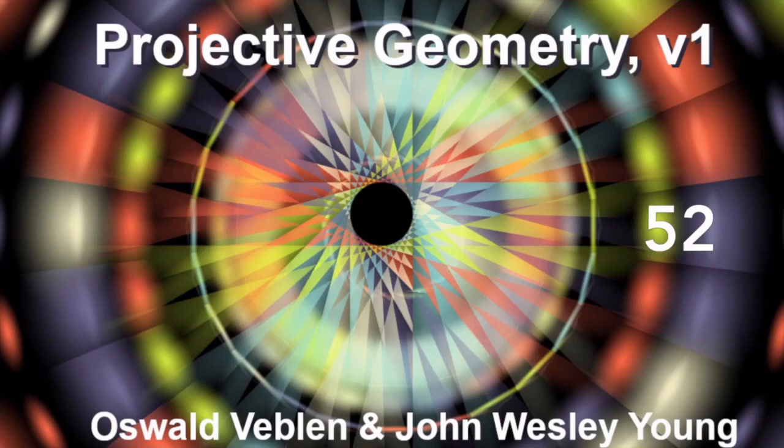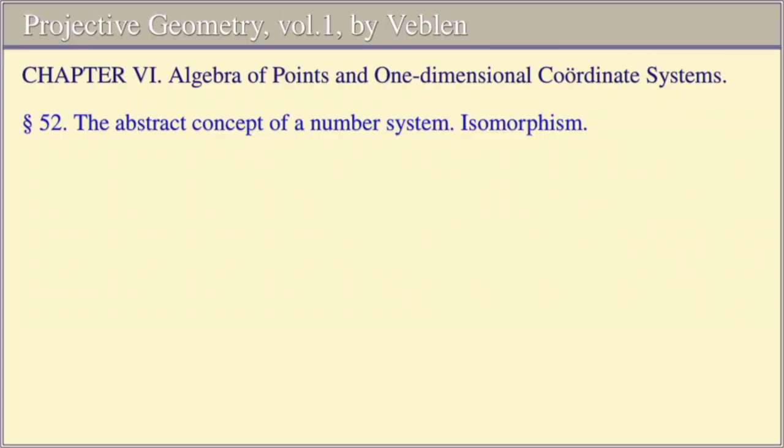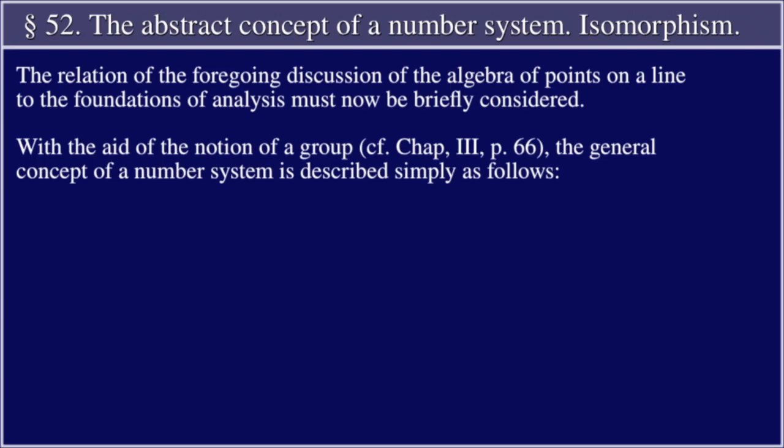Projective Geometry Volume One by Oswald Veblen and John Wesley Young. Chapter Six: Algebra of Points and One-Dimensional Coordinate Systems. Section 52: The Abstract Concept of a Number System: Isomorphism. The relation of the foregoing discussion of the algebra of